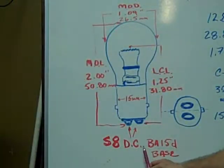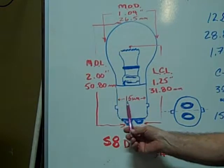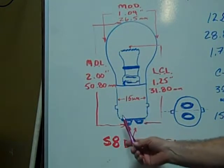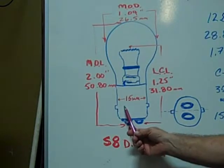The S8 DC or dual contact BA-15D-base miniature bulb has a base diameter of 15 millimeters and the pins are 180 degrees from each other on either side of the base.